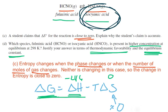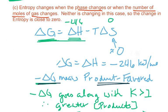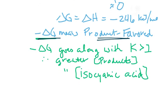And product-favored means we're going to have a lot of this isocyanic acid. So when this reaction goes, we would expect a lot of isocyanic acid will be present in higher concentration. Now the second part of that is delta G goes along with a K that is greater than 1. Those two things just go together. And that means if I have a K that's greater than 1, that means we're going to have more products, which is more of the isocyanic acid.